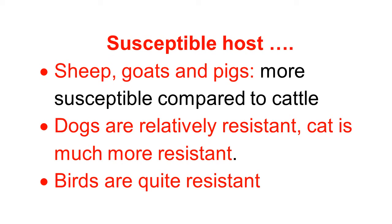Continuing with susceptible hosts — sheep, goat, and pigs are more susceptible compared to cattle. Dogs are relatively resistant. Cats are even more resistant. Birds are quite resistant, so tetanus does not occur in birds. In summary: horses and mules are the highest susceptible, cattle are less susceptible, sheep, goats, and pigs are comparatively more susceptible than cattle, dogs and cats are relatively resistant, and birds are quite resistant.